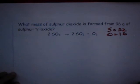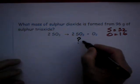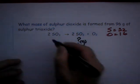Here's the first question, pause please and have a go. What mass of sulphur dioxide is formed from 96 grams of sulphur trioxide?